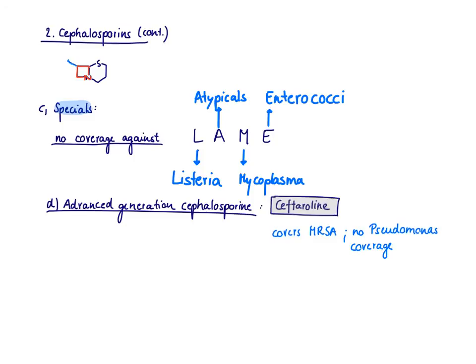The only other thing I want to mention is a so-called advanced generation cephalosporin, which is ceftaroline. Sometimes it's referred to as fifth generation, but most people just say advanced generation because it doesn't make sense to call it a fifth generation. Normally when we talk about these generations, we always increase the spectrum of activity and add on bacteria. But this is not true for ceftaroline. It's actually pretty different. First of all, it's the only beta-lactam antibiotic that covers MRSA, which is discussed in another video. And it does not have any pseudomonas coverage, which is in contrast to ceftazidime and cefepime, third and fourth generation, which do have pseudomonas coverage.